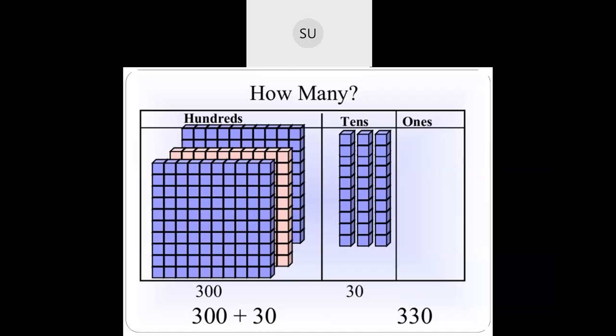One more example. How many ones are there? We have 0 ones. In the tens we have 3 tens, and in the hundreds we have 3 hundreds. So that is 300 plus 30, which is 330. So in 3-digit numbers we have 3 places: ones, tens, and hundreds.